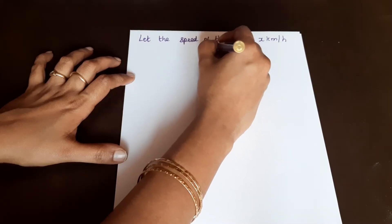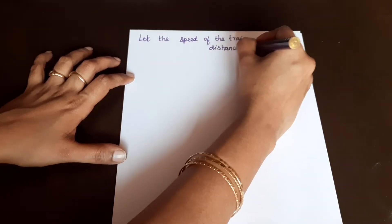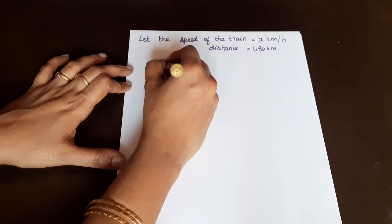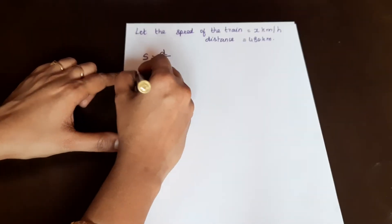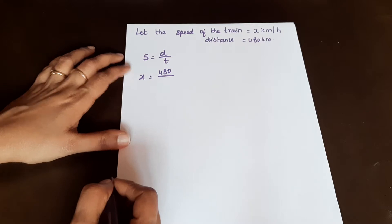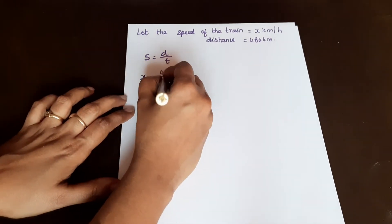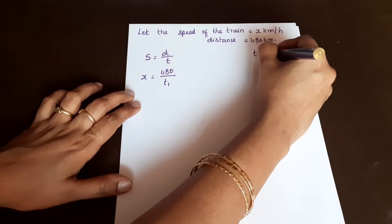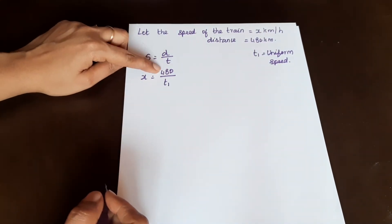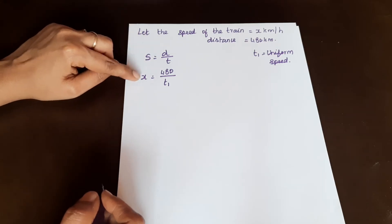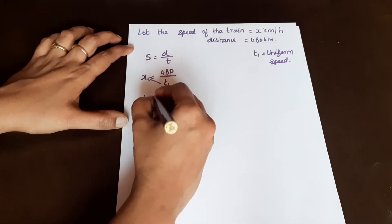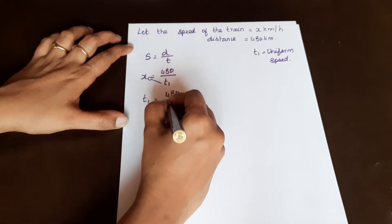The distance given is 480 km. Since speed equals distance divided by time, and we assumed speed is x, we get x = 480 / t1. Let t1 be the time taken at uniform speed. So, by cross-multiplying, t1 is equal to 480 divided by x.